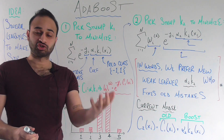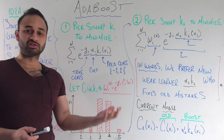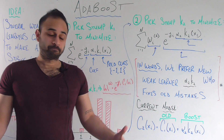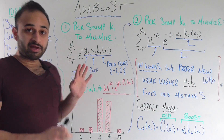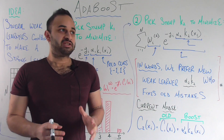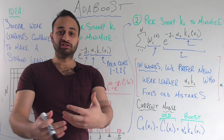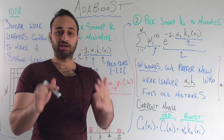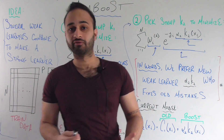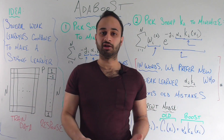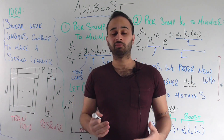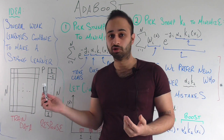So k one again is the decision stump we chose, and alpha one is the coefficient scaling this negative one or one appropriately. So that is how we build our first level decision stump. Now this is at the end of the day, even though we picked the best decision stump possible, it's still just a one level decision tree, so it can't do too well because there's probably a lot of different intricacies in this data, and just choosing one predictor is not going to capture all of them.